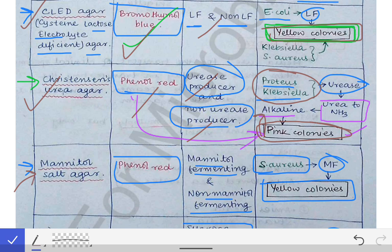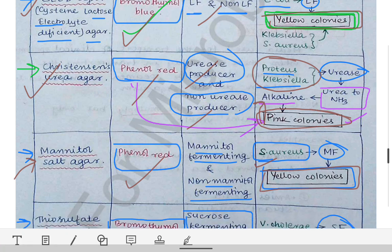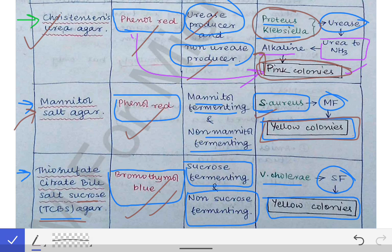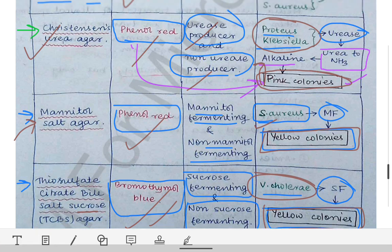Mannitol salt agar contains phenol red as the indicator and differentiates between mannitol fermenting and non-mannitol fermenting bacteria. Staph aureus, being a mannitol fermenter, produces yellow colored colonies. TCBS agar — Thiosulfate Citrate Bile Salt Sucrose agar — contains bromothymol blue; Vibrio cholerae is a sucrose fermenting organism that produces yellow colored colonies. These are all the differential medias helpful in differentiating between different groups of microorganisms.